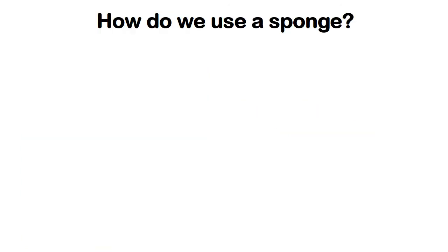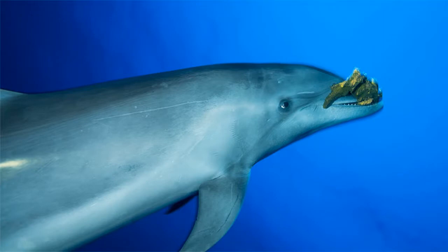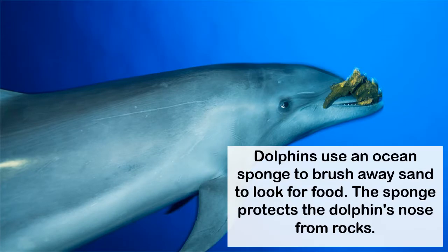So how do we use a sponge? Of course, to wipe things off or clean things. The dolphin uses the sponge in a similar way — it wipes the sand away. Dolphins use an ocean sponge to brush away sand to look for food. The sponge also protects the dolphin's nose from rocks.